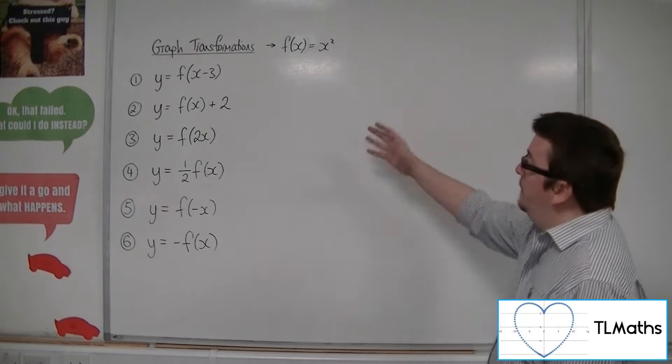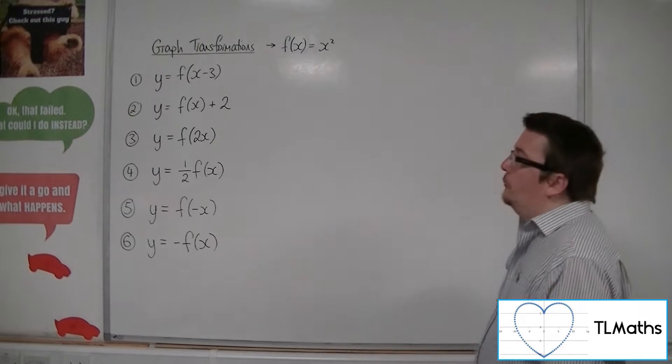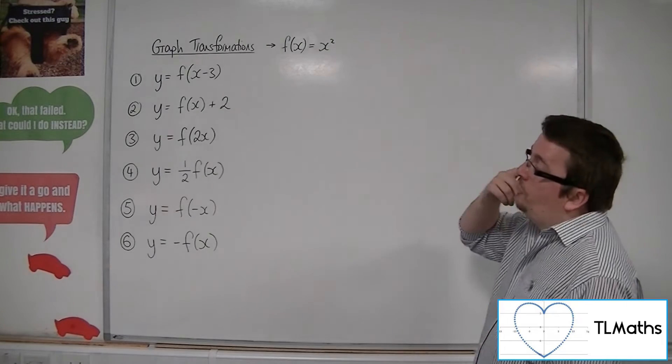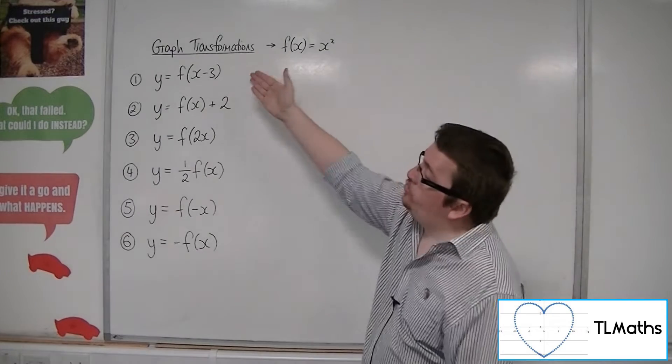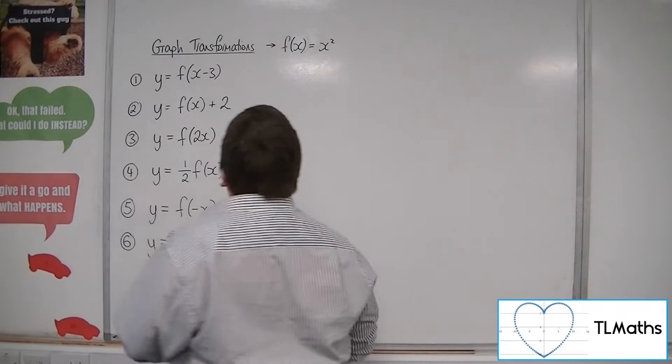So we're going to start off with this one, looking at f of x equals x squared. The first transformation we need to apply is a translation by the vector 3, 0.